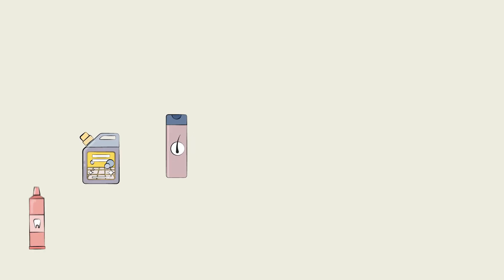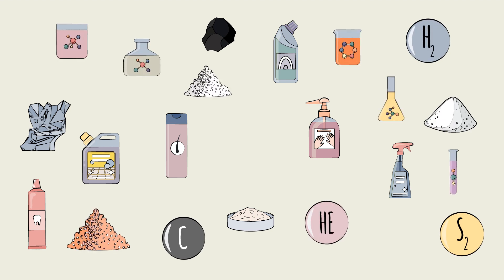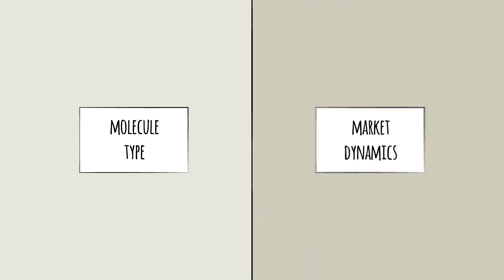So if chemicals are everywhere and the chemicals industry produces millions of unique chemical products, where should we start to better understand this landscape? Let's begin by grouping chemical products in two basic ways: by molecule type and by market dynamics.